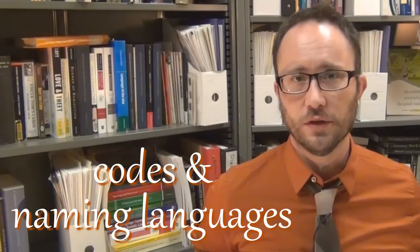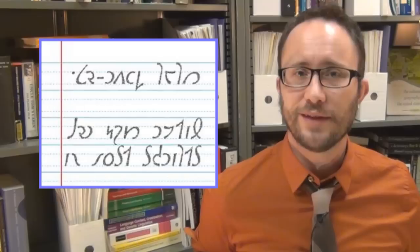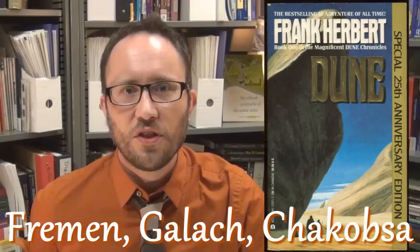So at the very most basic level, you have what are called codes or naming languages. These are aspects of conlangs, but they're not fully developed. So if you create a new orthography, a new way of writing an already existing language, like a new way of writing English, for example, that is a kind of code. And that's within the realm of conlanging, but it's not yet a full lang.